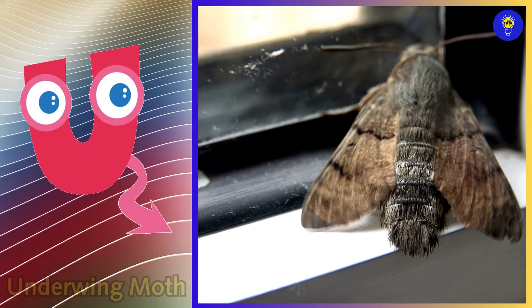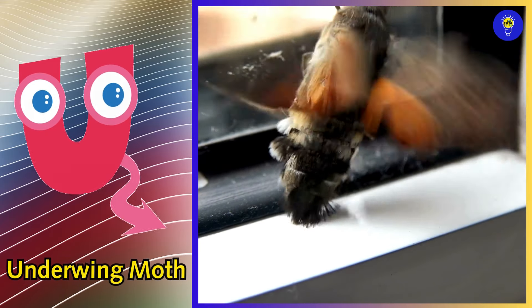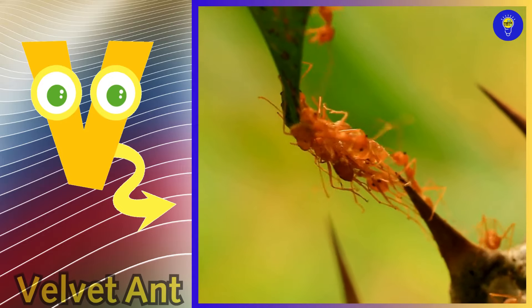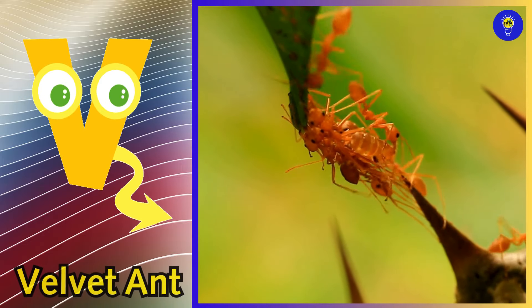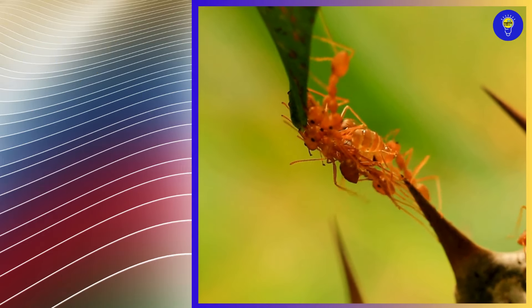U is for underwing moth. U, u, underwing moth. V is for velvet ant. V, v, velvet ant.